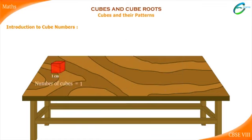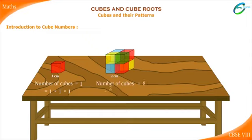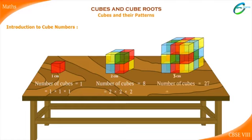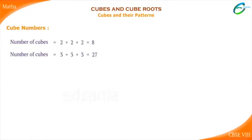1 can be obtained by multiplying 1 by itself 3 times. 8 is obtained when 2 is multiplied by itself 3 times. Similarly, 27 is obtained when 3 is multiplied by itself 3 times. Such numbers, which are obtained when a number is multiplied by itself 3 times, are known as cube numbers. Cube numbers are also known as perfect cubes. So 8 and 27 are both cube numbers, or perfect cubes.